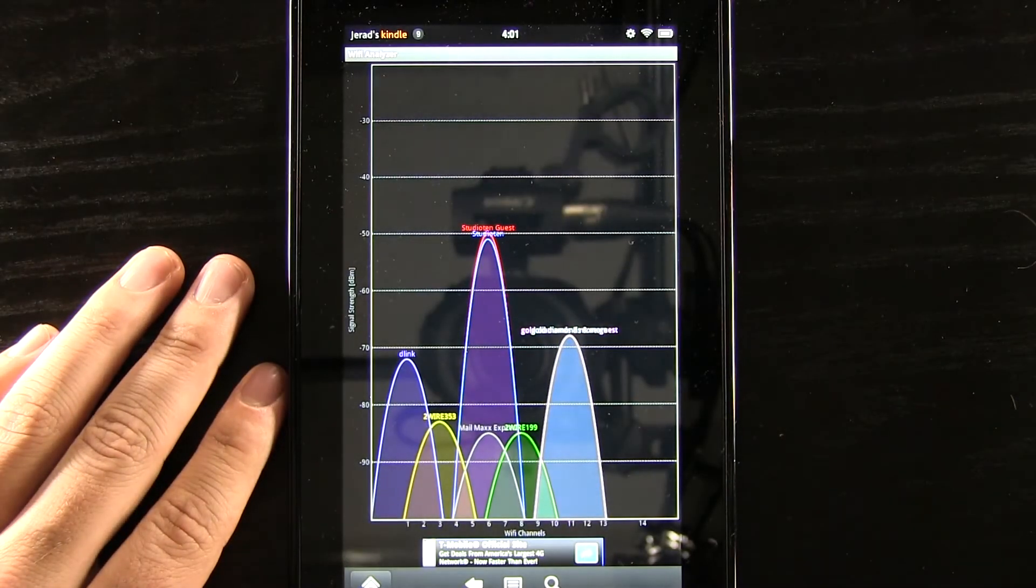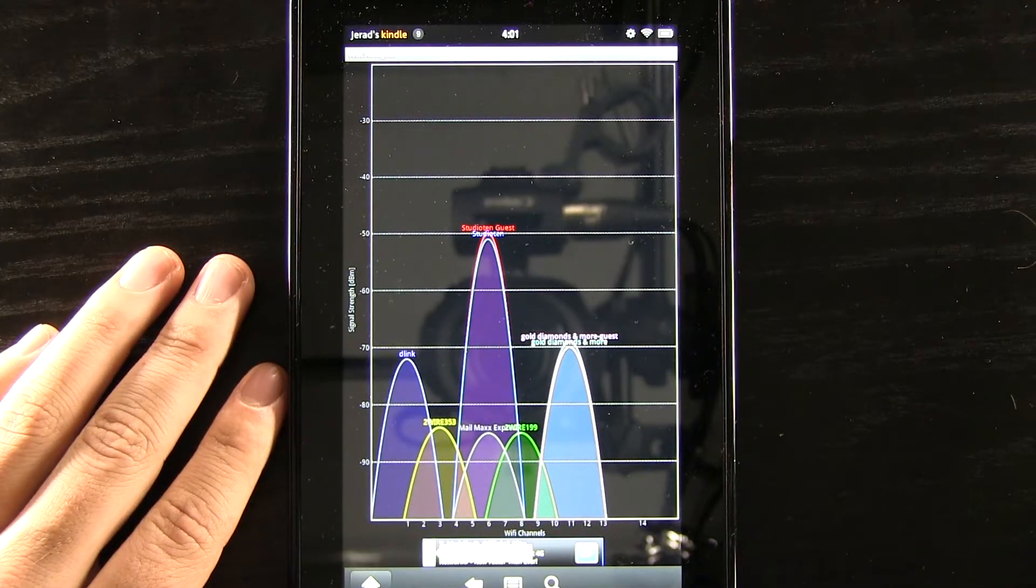What this does is it gives you this graph that you can look at all of the Wi-Fi signals that are within your area. Obviously the biggest spike will be the one closest to you, and then there will be smaller spikes showing all of the different networks that are around. Even some of those ones that it typically wouldn't show you because they're out of range, this is showing you everything.